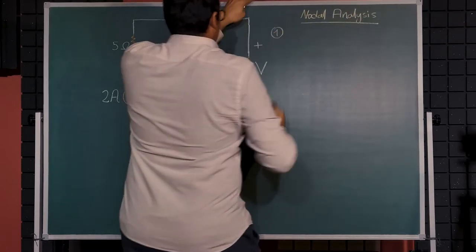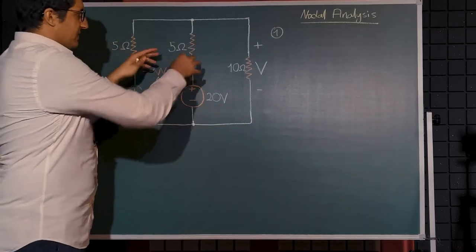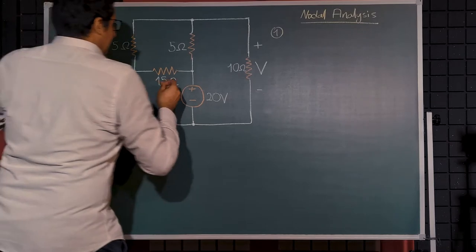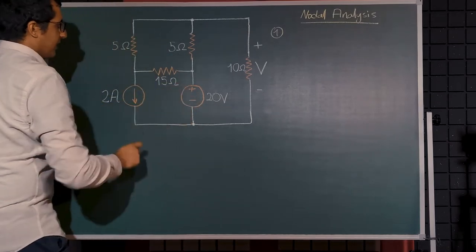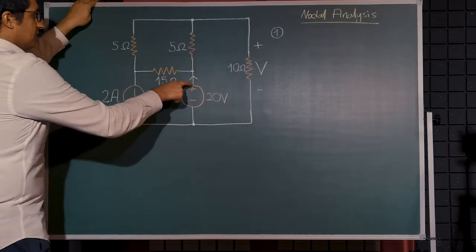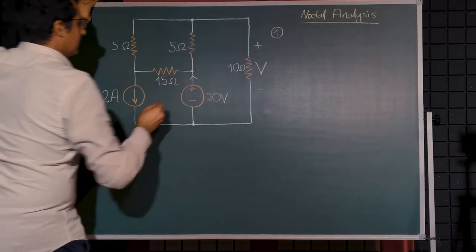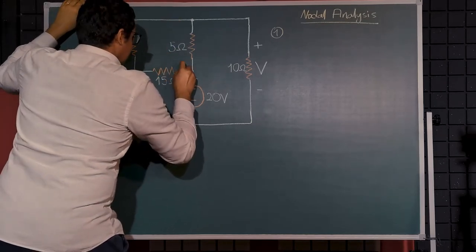For my first equation, I assume directions for the currents on the circuit. Since I have a voltage source here, in this orientation, current must be flowing in this direction towards this node.